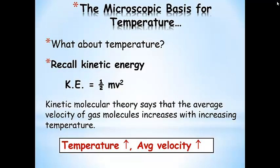What about temperature? Kinetic energy is equal to one-half mv squared — mass in kilograms times velocity squared. Kinetic molecular theory says that the average velocity of gas molecules increases with increasing temperature. When I say average velocity, I'm talking about the average in a large group of molecules. Some will be slower, some will be faster, and many will be clustered around this average velocity — it's not an absolute.